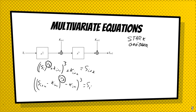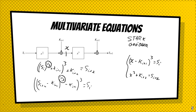But we can express this also as a multivariate equation. We introduce an intermediate variable x. In two equations: (x - K_{i+1})^3 = S_i, and x^3 + K_{i+2} = S_{i+2}. We see this is a multivariate equation because each equation is in multiple variables, and each equation is also of low degree.